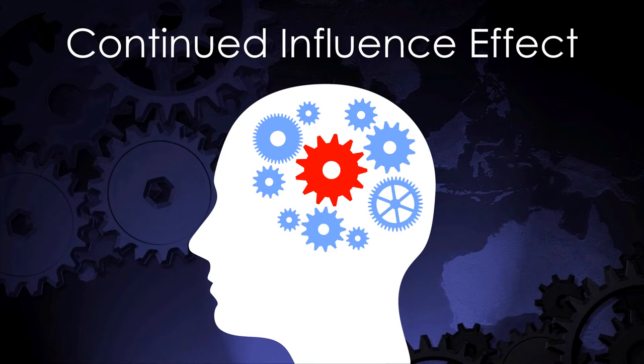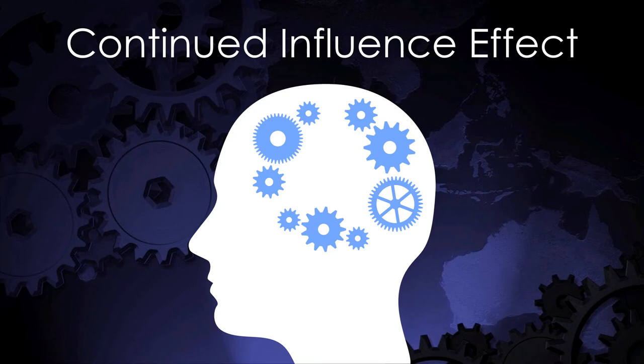Something else which can happen is the continued influence effect. Imagine a court case where a suspect was presented who fits very well in your mental model of what happened — he is the red gear wheel in the middle. But nonetheless he gets acquitted, perhaps because of insufficient evidence. This leaves a big gaping hole in your mental model, and this is something our mind doesn't like.